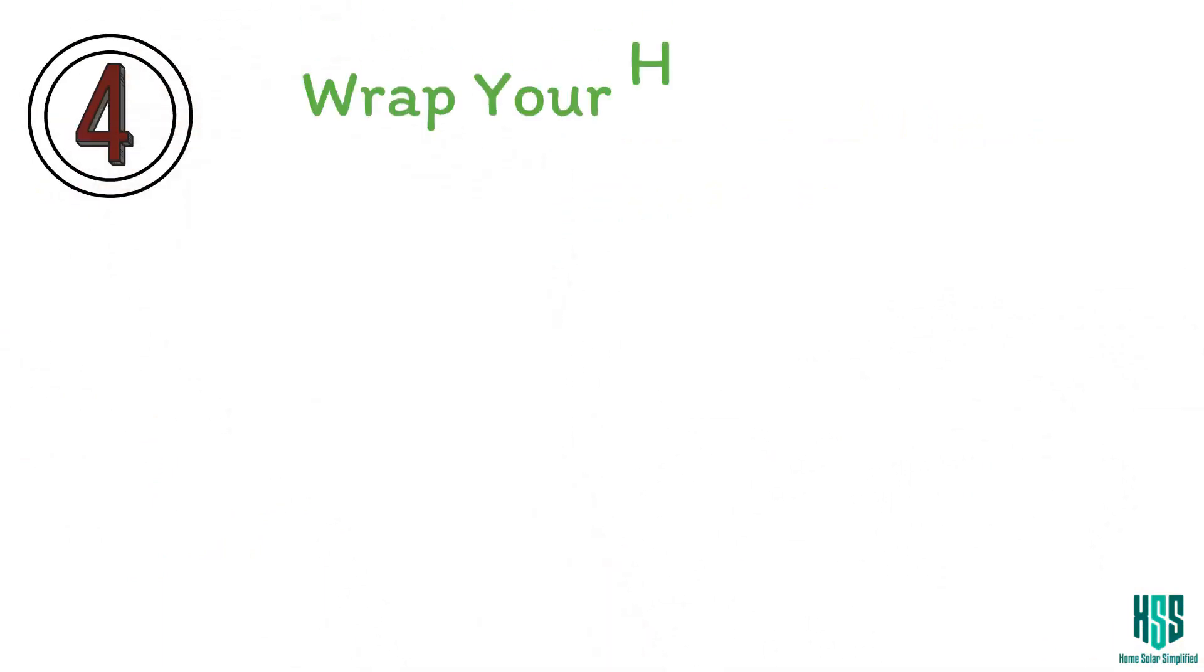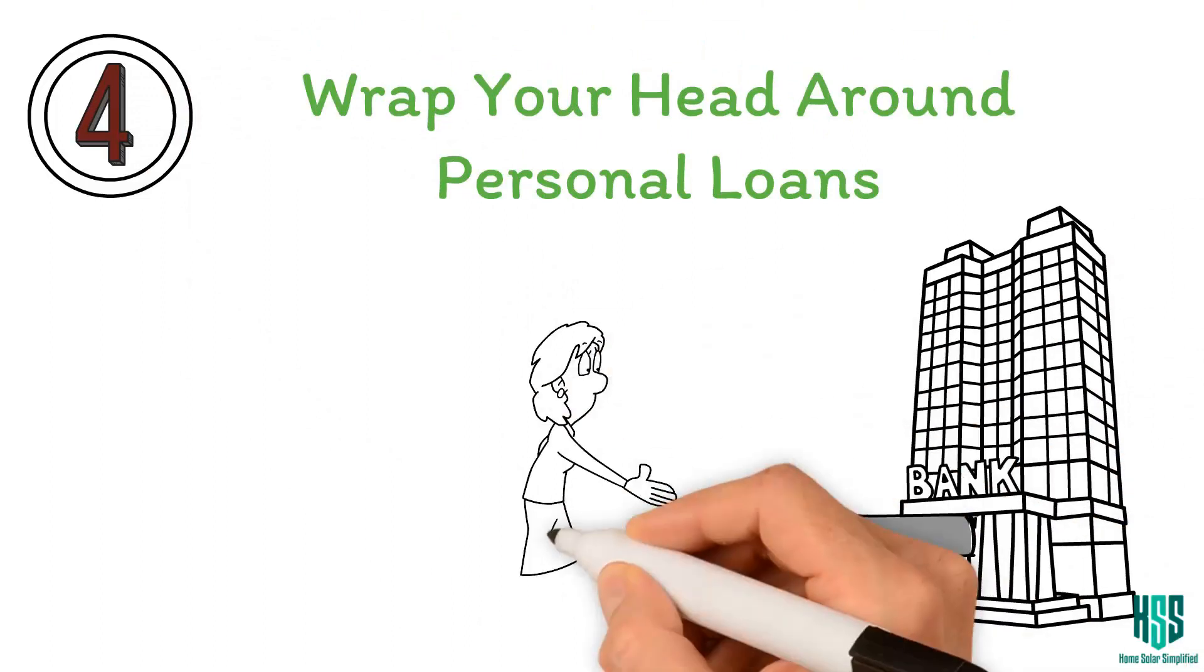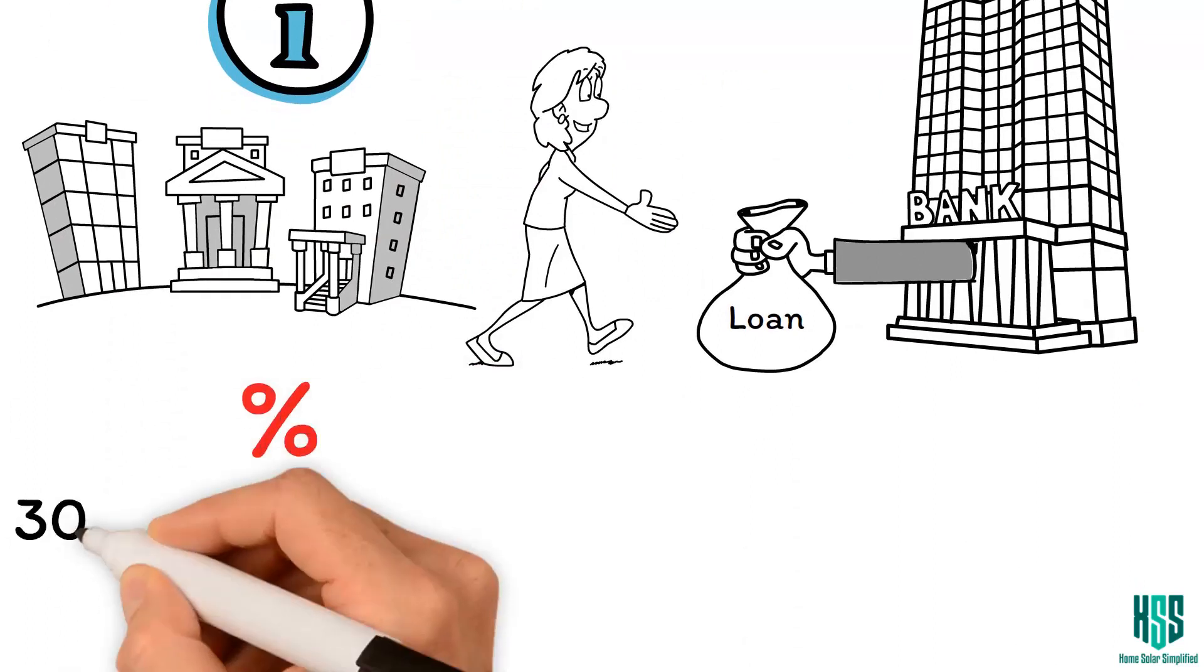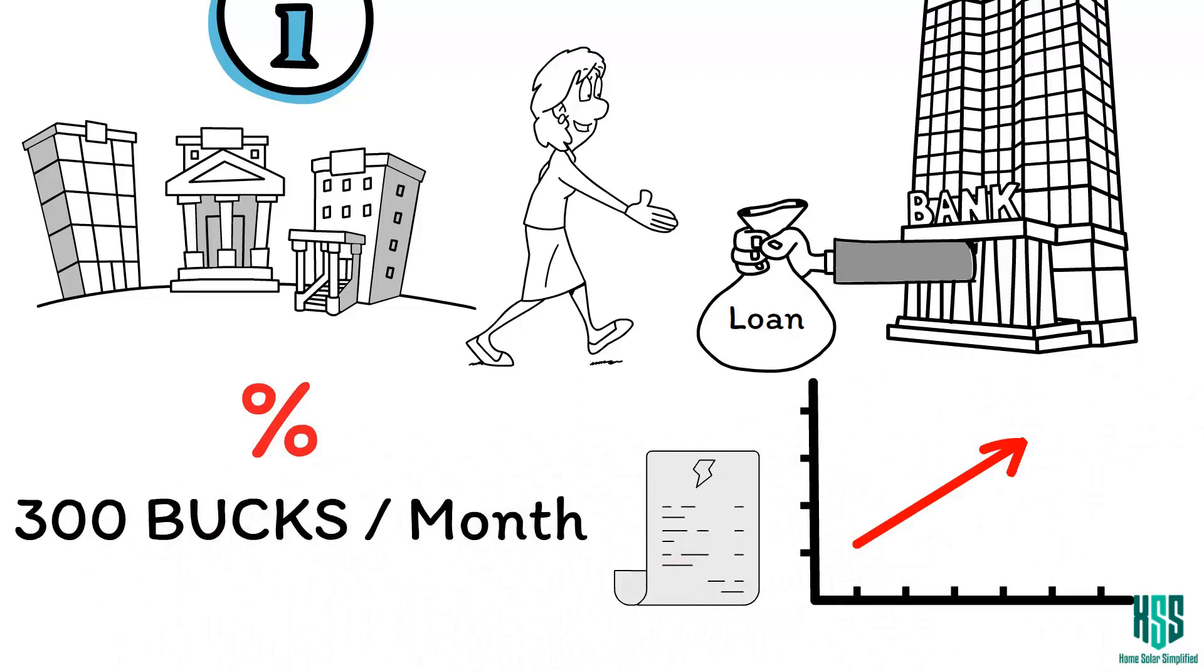Tip four, wrap your head around personal loans. You could also look into personal loans. I've got some info on a few banks that might help. But remember, the interest might be around 300 bucks a month. It could be worth it if your electric bill is sky high.